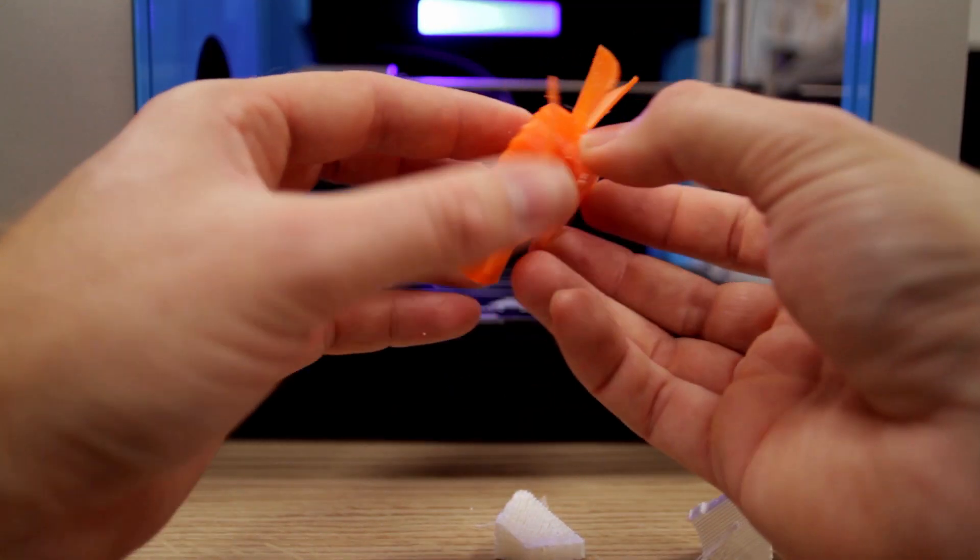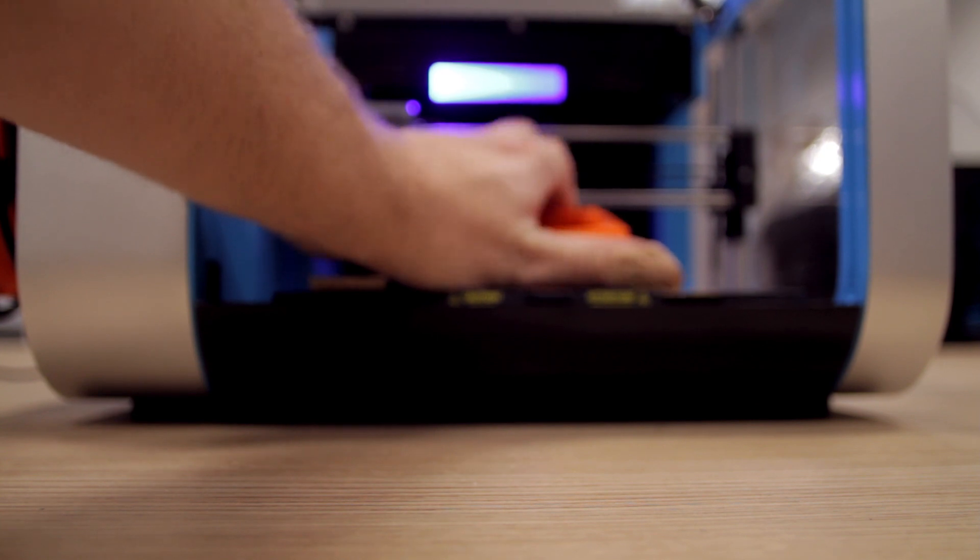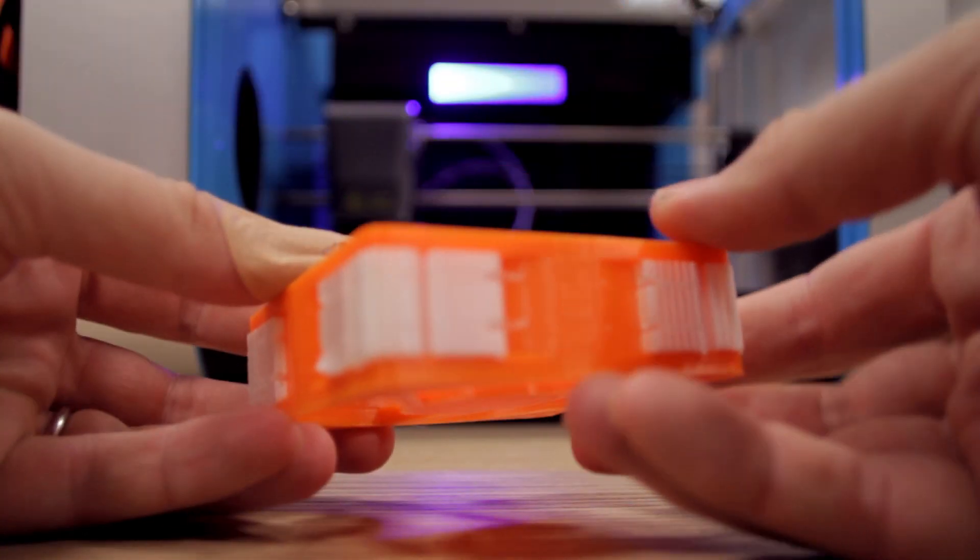Robox Dual is less than half the price of competing printers and has a far better list of features, so you could buy two Robox Dual for the same amount and double your productivity.